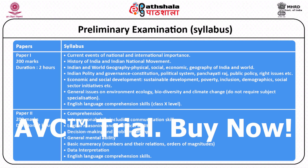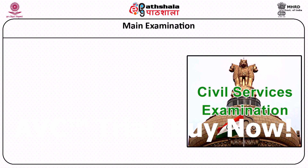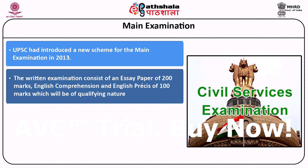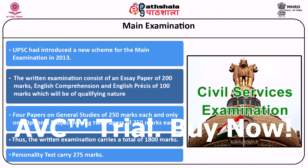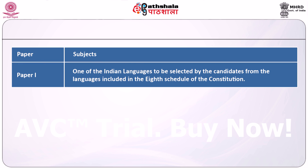Overall the preliminary examination is of 400 marks and is a screening examination. Those selected are then eligible to appear for the mains written examination. UPSC introduced a new pattern of mains examination in 2013, introducing English comprehension, precis, and essay paper as qualifying papers. The main examination comprises 4 general studies papers of 250 marks each and 1 optional subject having 2 papers of 250 marks each. Those who qualify the written examinations are called for the interview, which is a personality test of 275 marks.